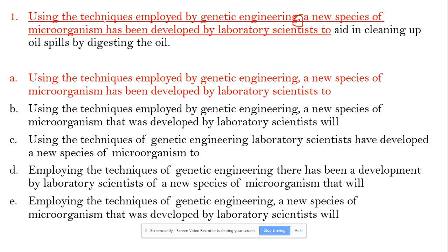Techniques cannot be used by a new species, so that's called an incorrect modifier. Therefore, A is out and B is out. Same problem with E, because E also says 'employing the techniques of genetic engineering' — techniques cannot be employed by a new species. So A, B, and E are out.